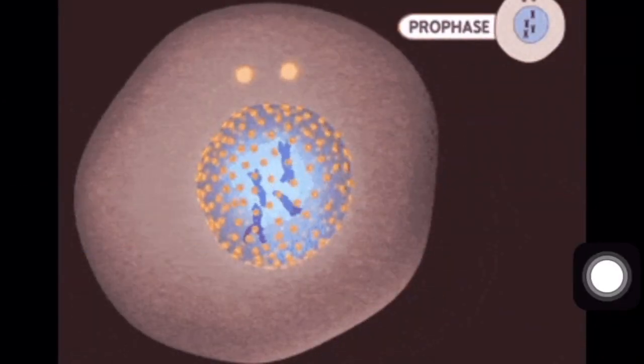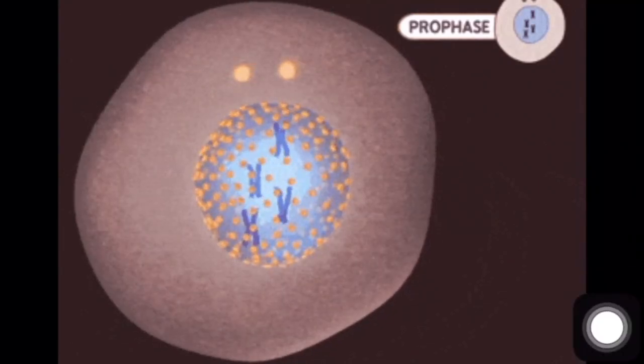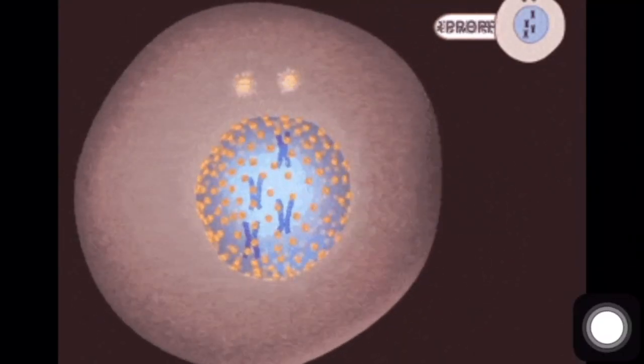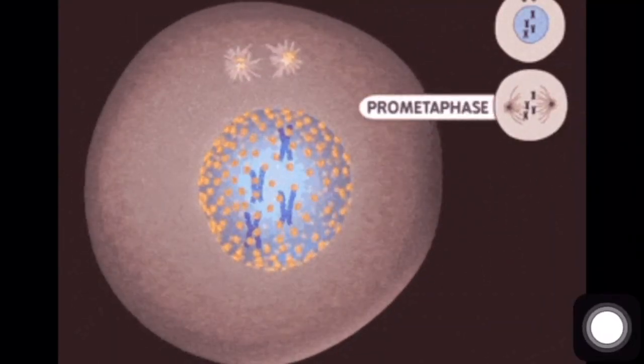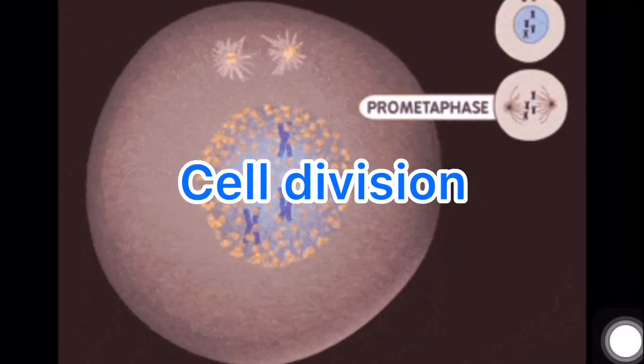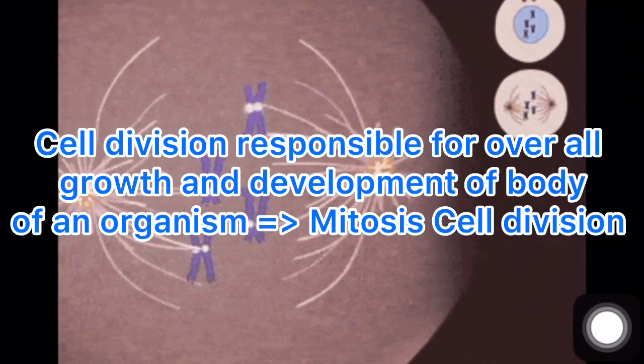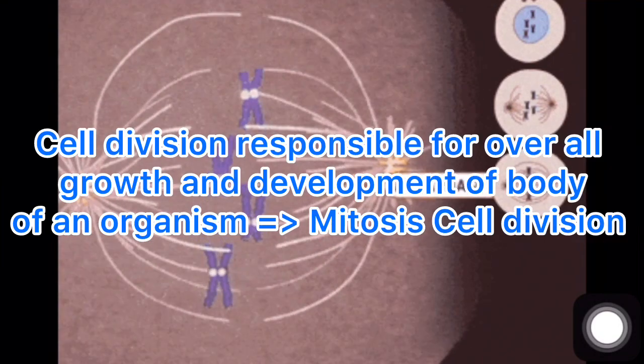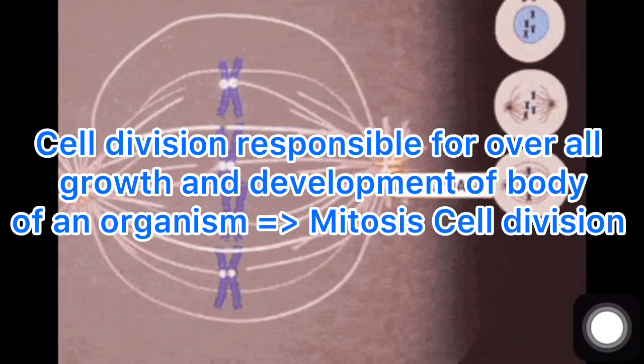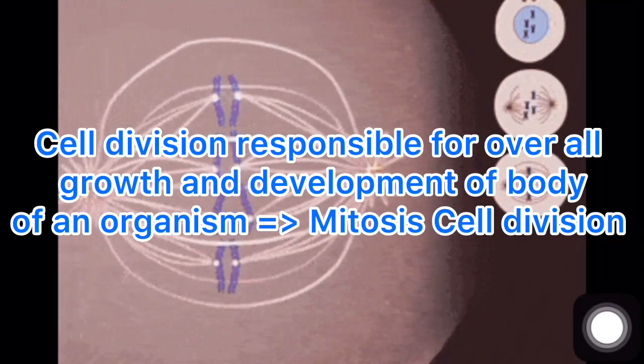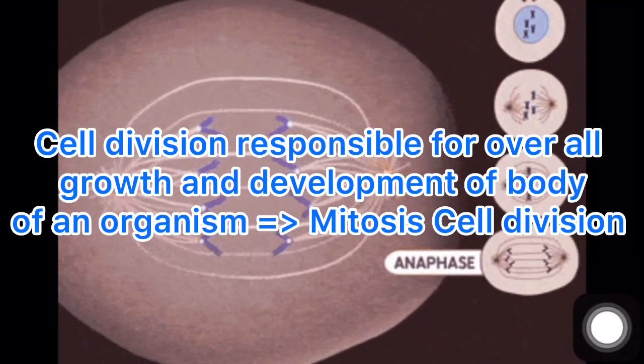Hello science learner, welcome to Comprehensive Math Science channel. In this video, you will learn about cell division and one of the main types of cell division which is responsible for the overall growth and development of a body of organism - that is mitosis cell division. So stay tuned till the end of this video; you will learn something interesting.